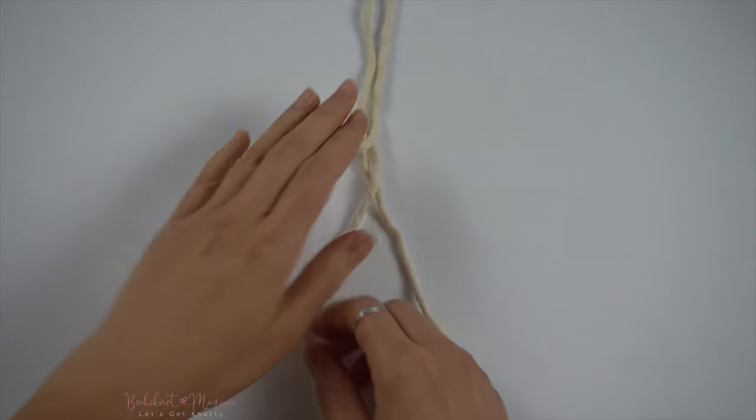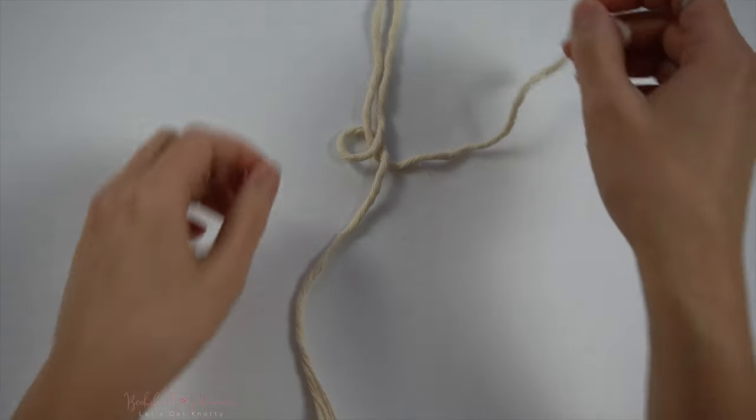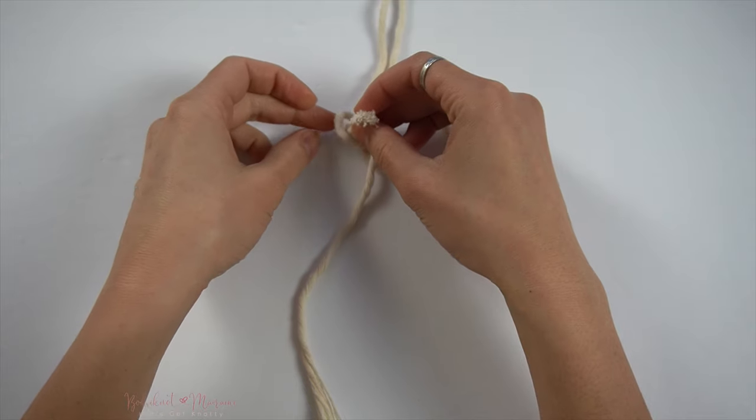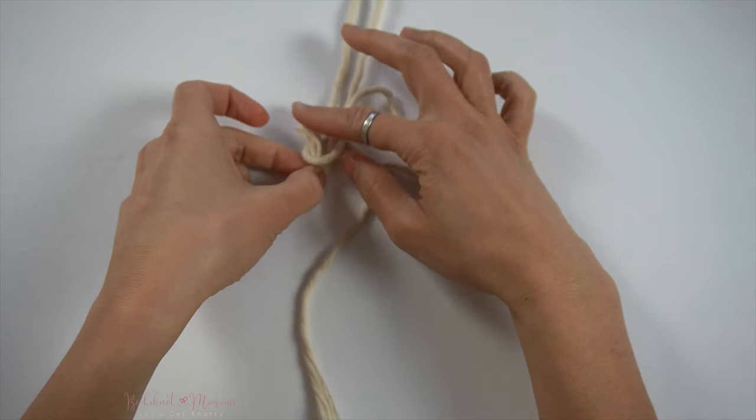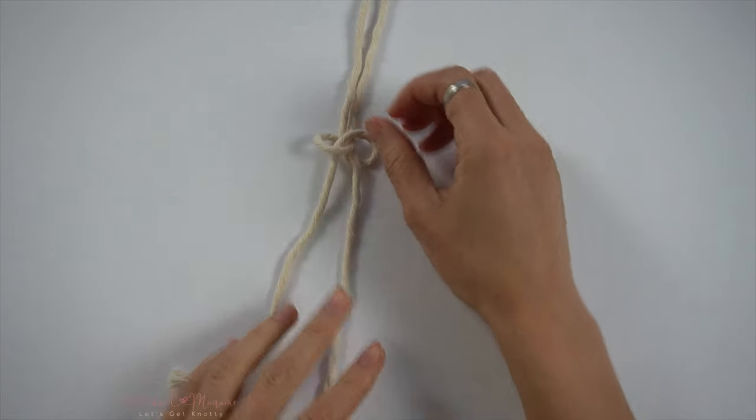Take the right cord and place it over the left cord, and then taking the left cord, weave it through the loop on the left. Pull on both cord ends to tighten the knot.